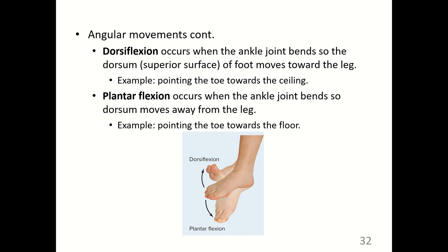More angular movements include dorsiflexion and plantarflexion. Dorsiflexion occurs when the ankle joint bends so the dorsum or superior surface of the foot moves toward the leg — for example, pointing the toes toward the ceiling. Plantarflexion occurs when the ankle joint bends so the dorsum of the foot moves away from the leg — for example, pointing the toes toward the floor.